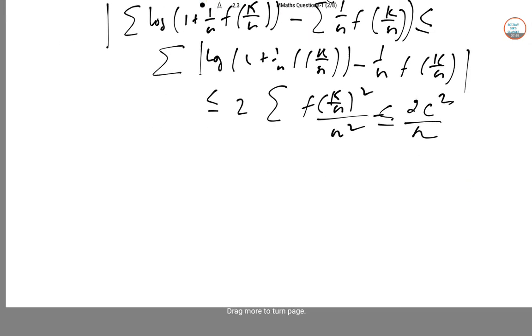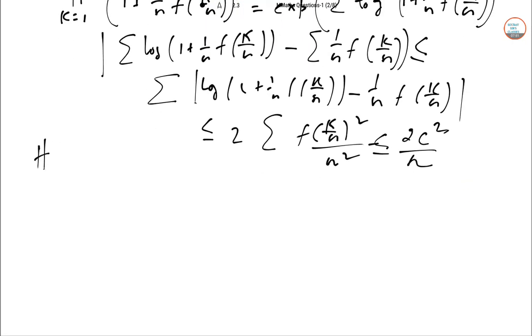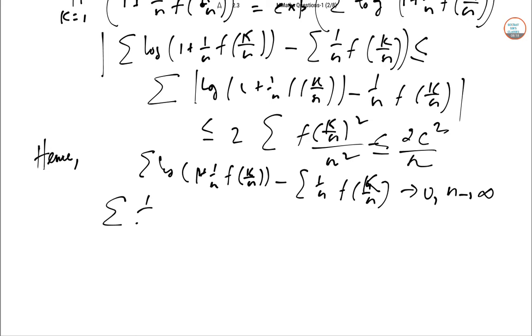We can write here so log of 1 plus 1 by N F of K by N minus 1 by N F of K by N this tends to 0 as N tends to infinity. Taking into account the convergence part so summation of 1 by N F of K by N tends to integral 0 to 1 F of X dx as N tends to infinity.